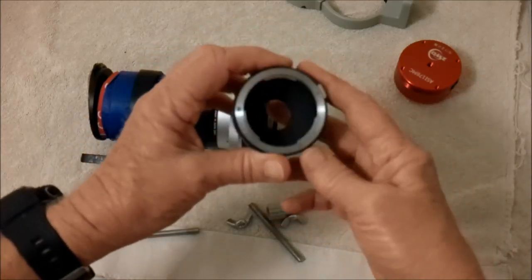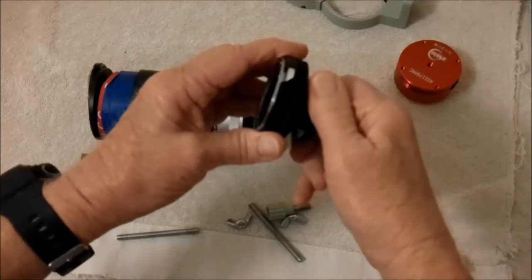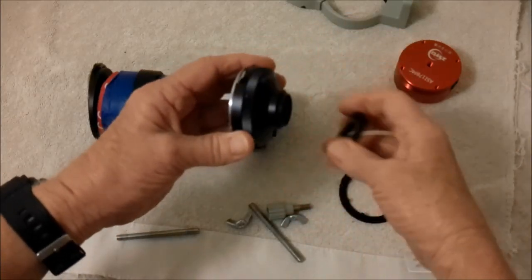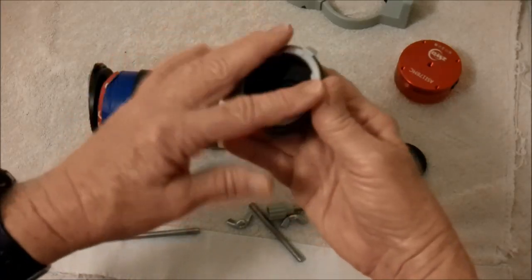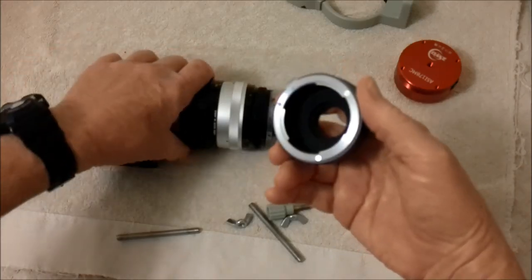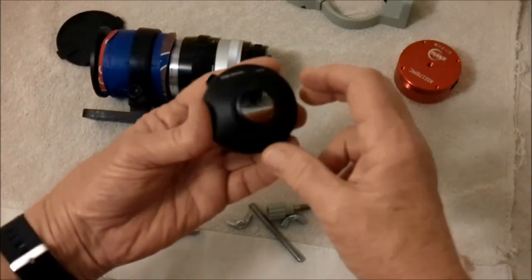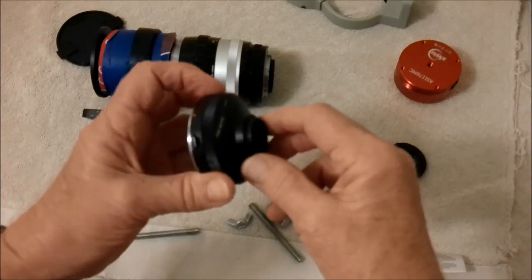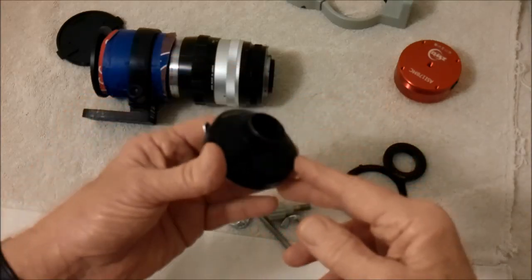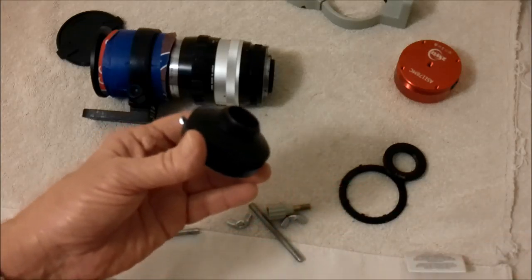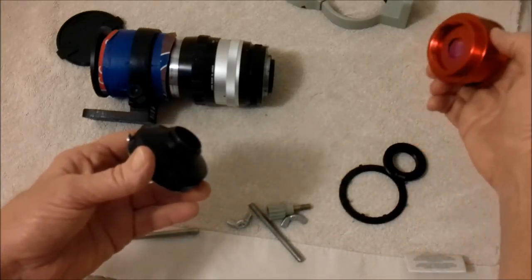And then this adapter here, I bought this years ago. This is to take, so you can put a, in this case this is for a Nikon lens. You can get them for Canon or whatever. And on the other end it's what they referred to as C-Mount. My old Meade Lunar Planetary Imager used C-Mount, and this here actually can too.